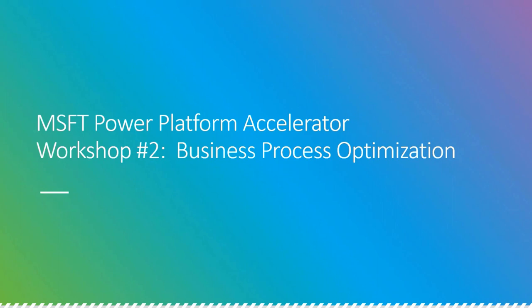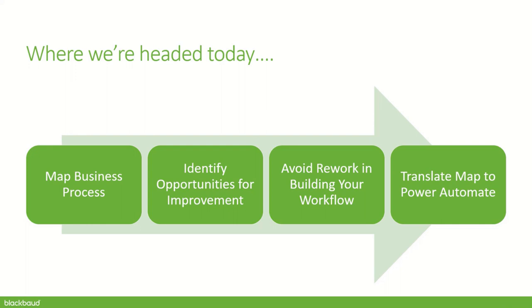Welcome everybody to workshop number two of the Microsoft Power Platform Accelerator. Today we're going to put on our BA hats, be business analysts for the day, and talk about business process optimization. We're going to move through a couple of different steps — first business process mapping, then identifying opportunities to improve your business processes, and then getting into Power Automate to start building out your workflows.